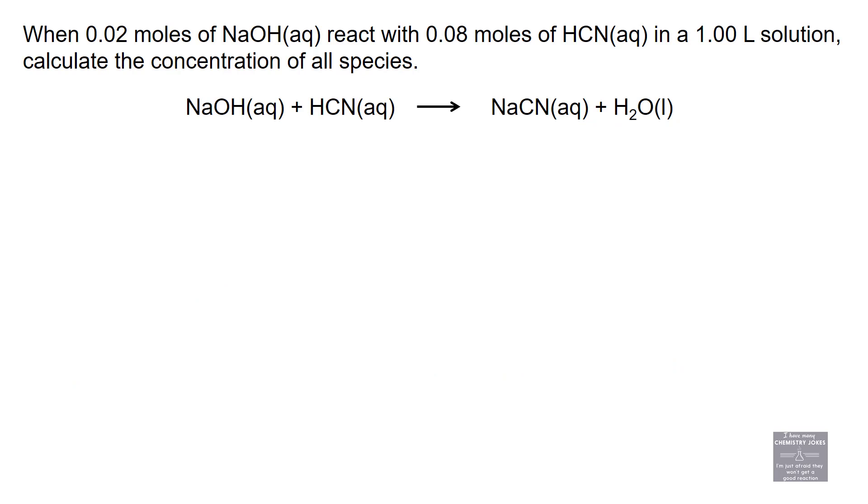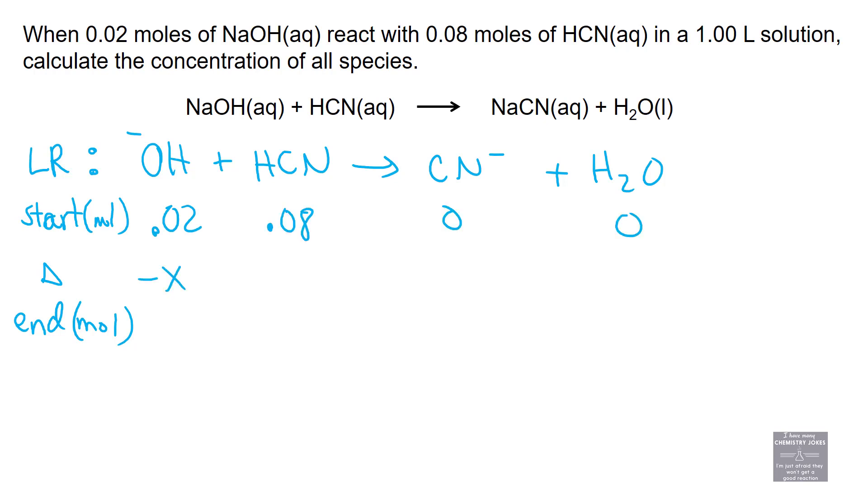Let's do the math associated with this strong reacting with weak. When 0.02 moles of NaOH reacts with 0.08 moles of HCN, calculate the concentration of all species at equilibrium. We're going to make a limiting reactant table. The equation should be your net ionic equation. Limiting reactants start in moles: 0.02 moles of OH-, 0.08 moles of HCN, none of CN-, none of H2O. Minus X, minus X, plus X, plus X.